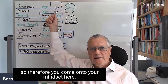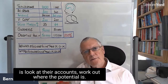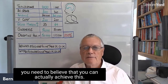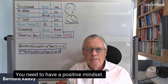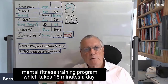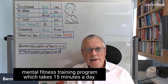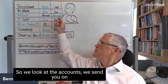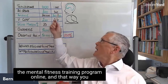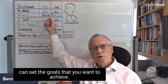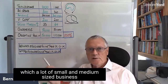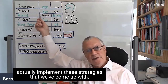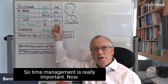You then come to your mindset. The first thing I do when I work with someone is look at their accounts and work out where the potential is. But then you need to get your mind right, because you need to believe you can actually achieve this. You need a positive mindset, and you can achieve this by going on a six-week mental fitness training program which takes fifteen minutes a day. I always make that an option for anyone I start working with. That way you can set the goals you want to achieve. And you also need to set time aside to actually implement these strategies — time management is really important.